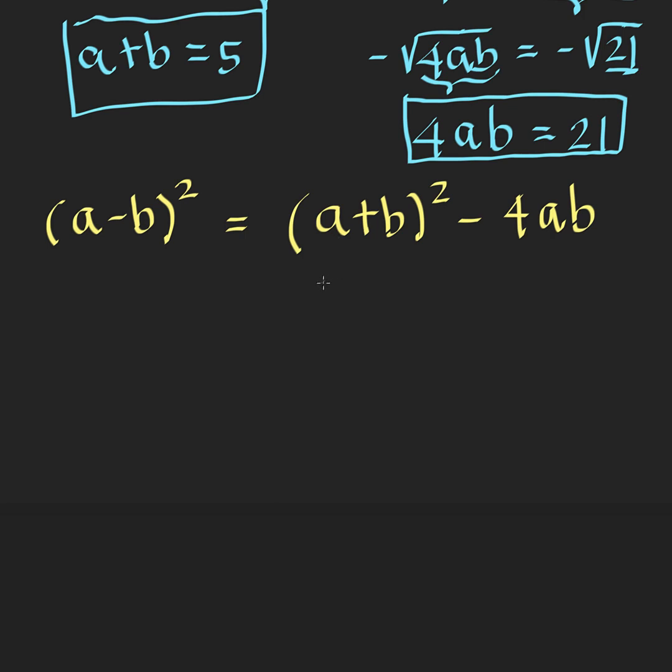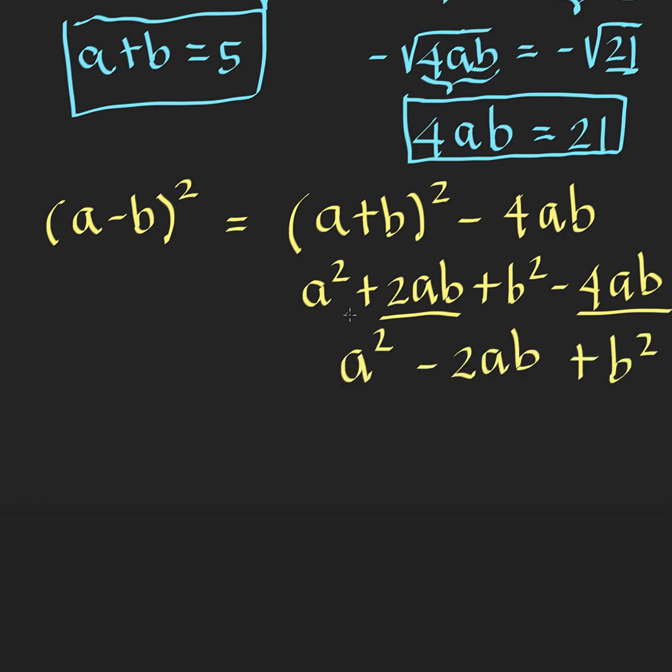this is just the same as A squared plus 2AB plus B squared, then copy minus 4AB. Notice that plus 2AB minus 4AB will give us minus 2AB, and we copy the A squared plus the B squared, which is exactly the square of this binomial A minus B.